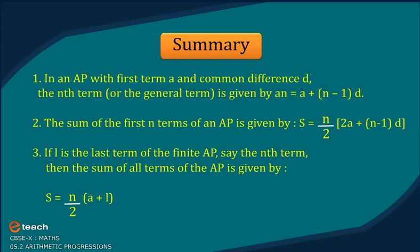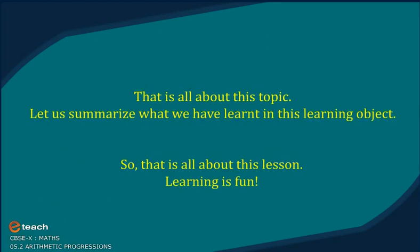Summary: In an AP with first term A and common difference D, the Nth term (general term) is An = A + (N minus 1)D. The sum of the first N terms is S = N/2 × (2A + (N-1)D). If L is the last term of a finite AP with N terms, then S = N/2 × (A + L). That is all about this topic. Learning is fun!